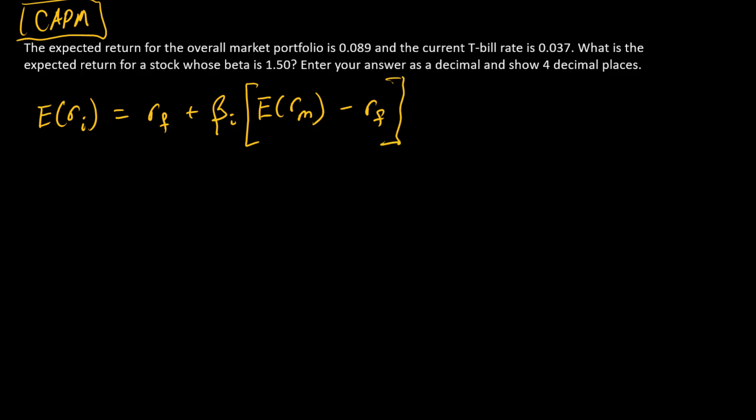If we look at this problem, we'll see that each of these quantities is given. I've got the expected return for the overall market right here, so that is expected R_M, expected return for the overall market portfolio. The T-bill rate, so that's the risk-free rate, is 0.037, so that's going to be R_F, and beta is there. That's the stock's beta. So we can insert these values and solve.